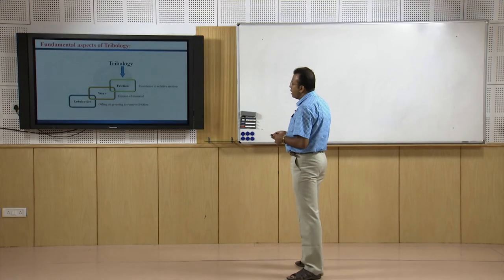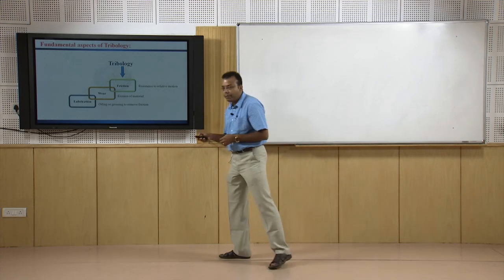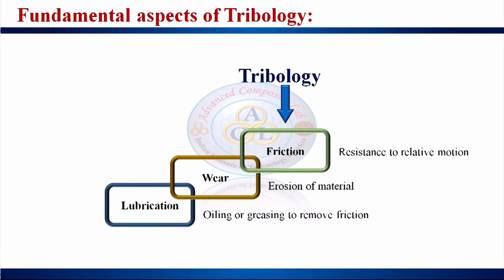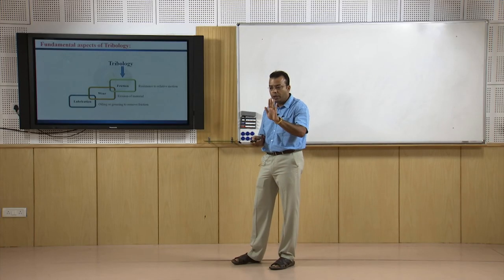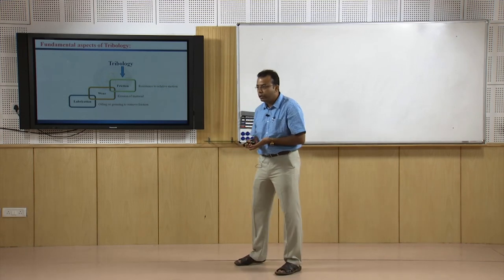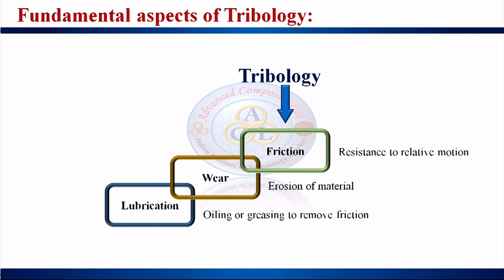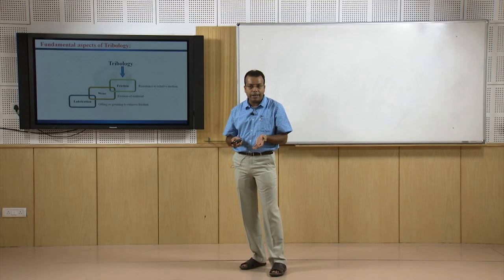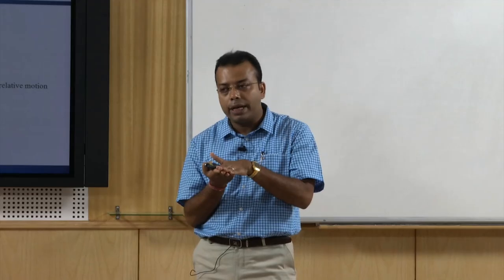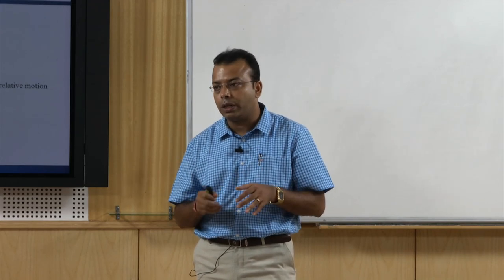The fundamental aspects of tribology are divided into three parts. First, friction, which is the resistance to relative motion — when a load is applied to a body, it resists motion, generating frictional force. Second, wear, which is the material loss resulting from friction. Third, lubrication, which reduces friction by placing oil, grease, or slippery materials between contacting surfaces, reducing the frictional force.